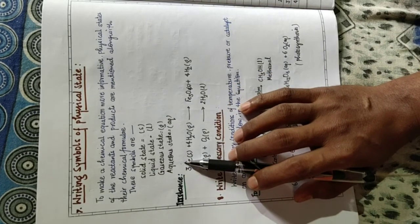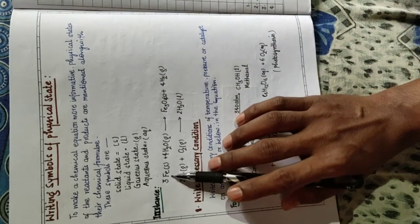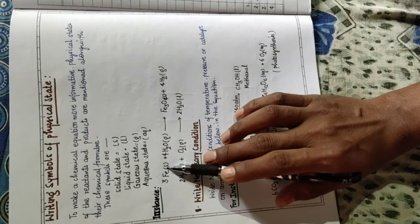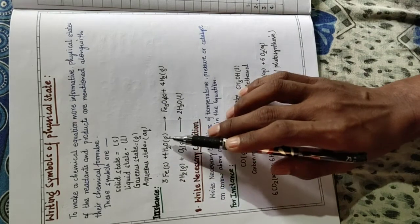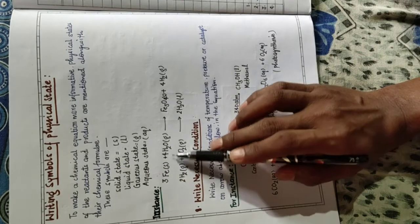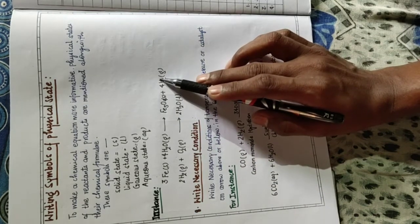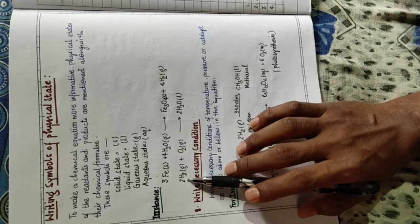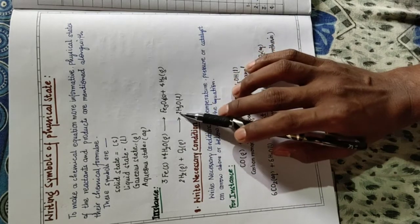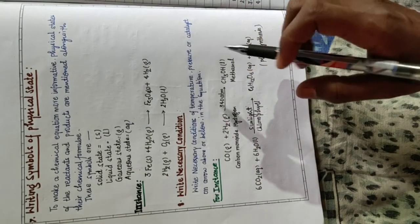For instance, iron reacts with water to form iron oxide and release hydrogen gas. Here iron is in the solid state and water is in the gaseous state — meaning it is vapor. So when iron reacts with vapor it forms iron oxide, which is hematite, and releases hydrogen gas. Second example: hydrogen gas reacts with oxygen gas to form liquid water. In this way we make a chemical equation more informative.